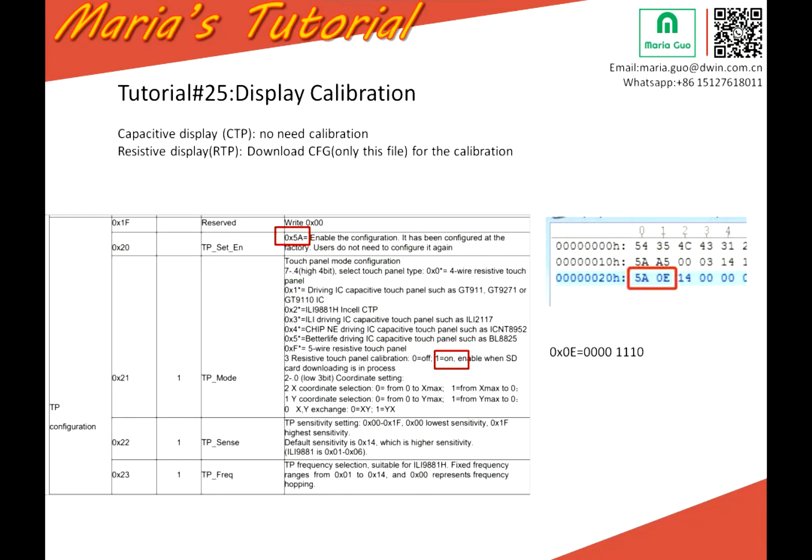Let me clarify something. For the capacitive display, the model number in the PCDA is WTC, so no calibration needed. But for the RTP display, I mean resistive display, the model number is WTR. So you need to do the calibration sometimes.